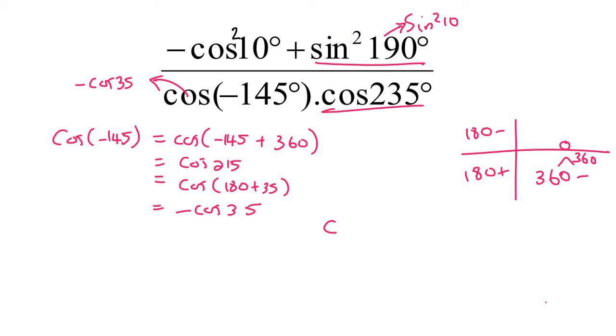And then the last one is cos 235. Now, that can be rewritten as cos of 180 plus 55. And so that's going to give you negative cos 55 because cos is negative in that quadrant.